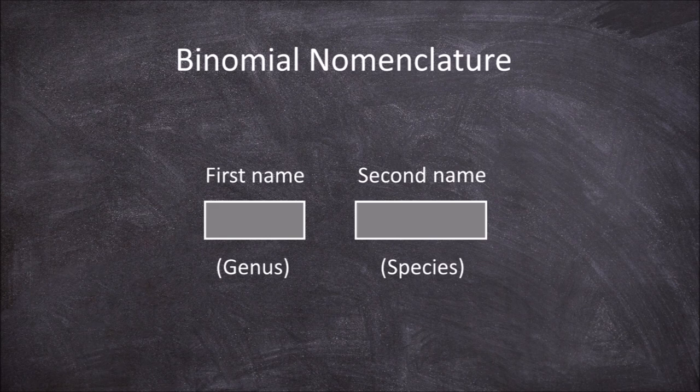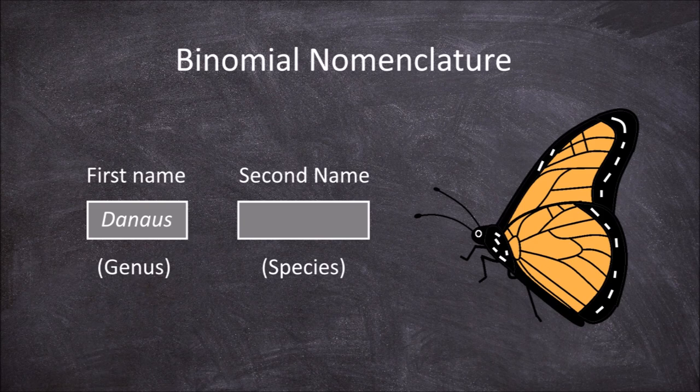If we take an example of the monarch butterfly, its genus name is Danaus, and its species name is Plexippus. Its full binomial name is Danaus Plexippus.